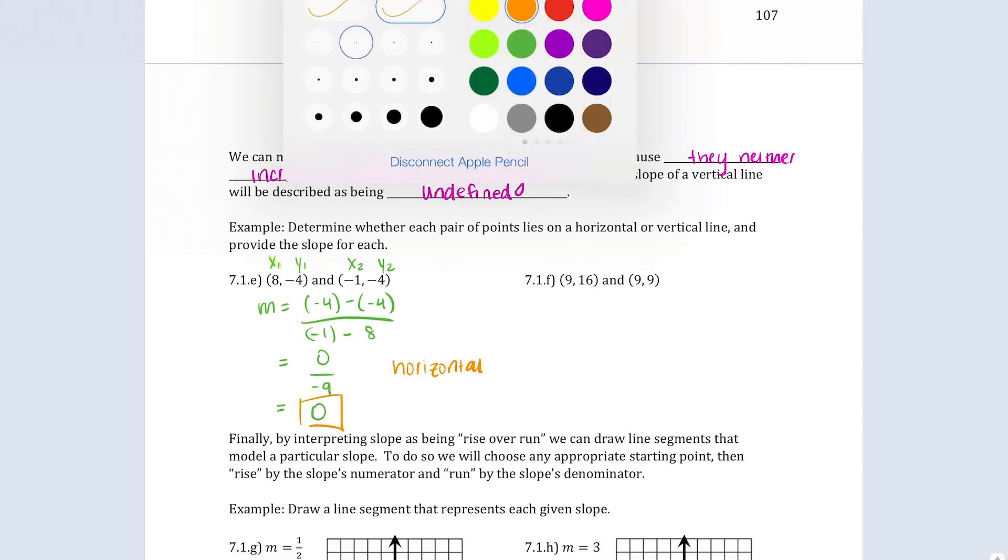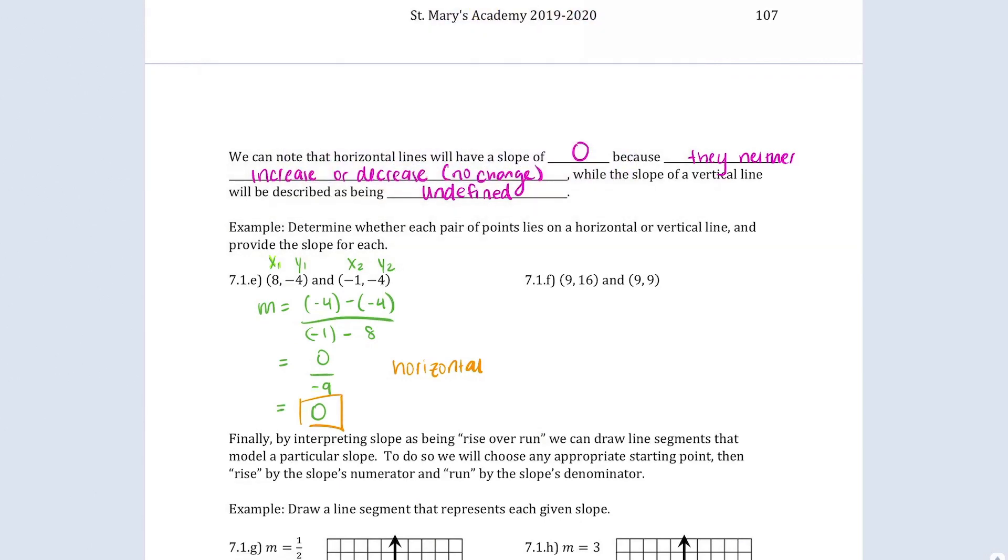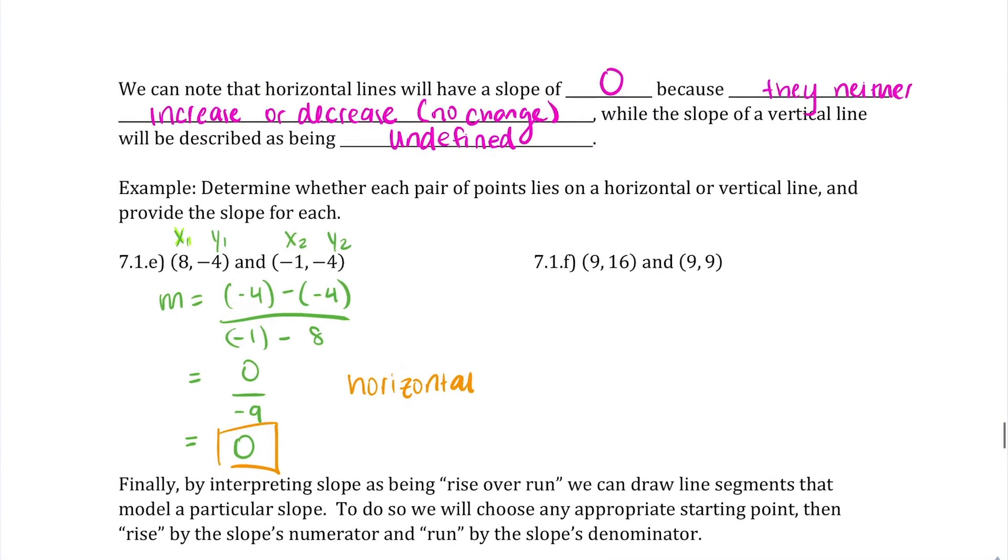Taking a look at the second example, same thing. We're going to label our points: x1, y1, x2, y2. And then, when we calculate this, we're going to get 9 minus 16 over 9 minus 9. When we reduce that, negative 7 divided by 0. Now, this should clue into your mind that we can't divide anything by 0 in math. And so, because of that, we say that the slope is undefined. And, again, referring back to the earlier notes, when we rise but don't run, then we have a vertical line.